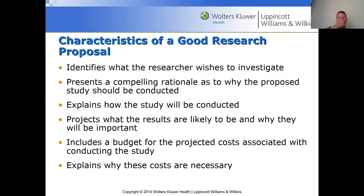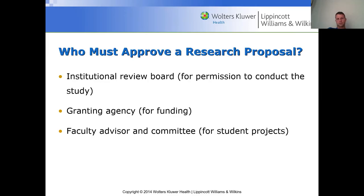So who's got to approve the research proposal? They kind of go in a weird order on the slide — I'd actually start at the bottom. The advisor and committee need to look at it first before you go to an IRB. This applies specifically to students. So the order depends on whether we're working with students or not.